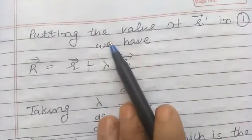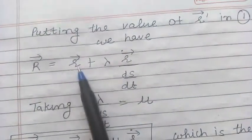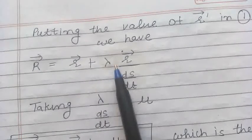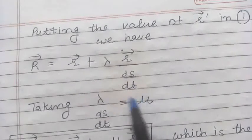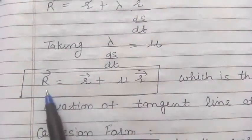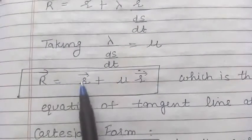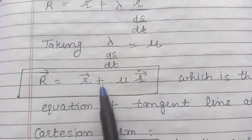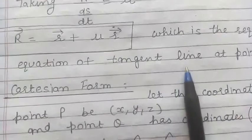Substituting into equation 1, it becomes: vector R = vector r + λ times (R-dot divided by ds/dt). Taking this scalar as μ, the equation of the tangent line at point P takes the form: vector R = vector r + μ · R-dot. This is the equation of the tangent line at point P.